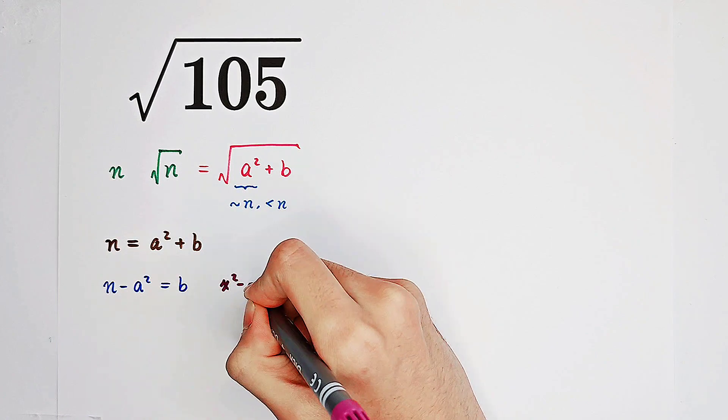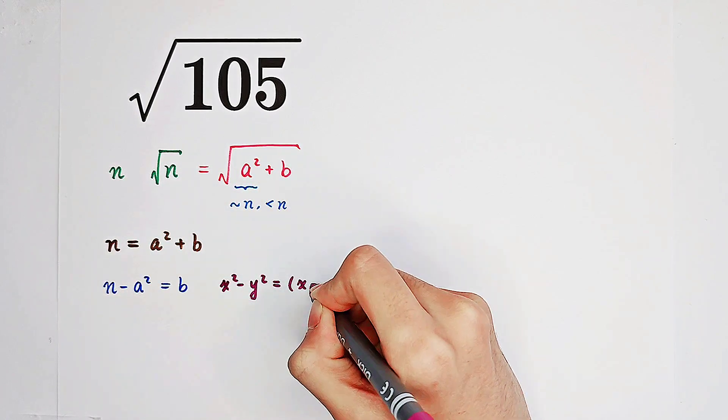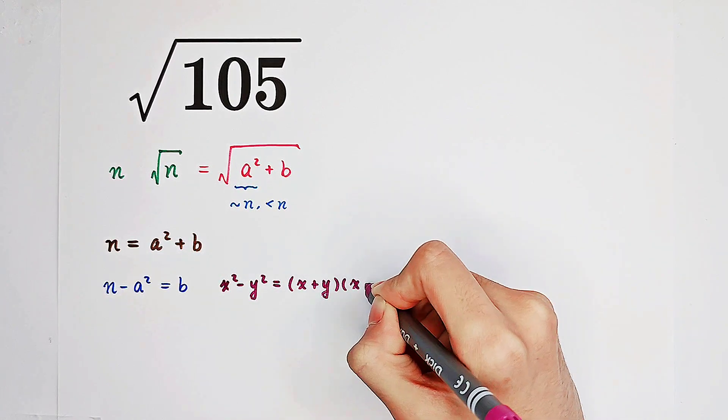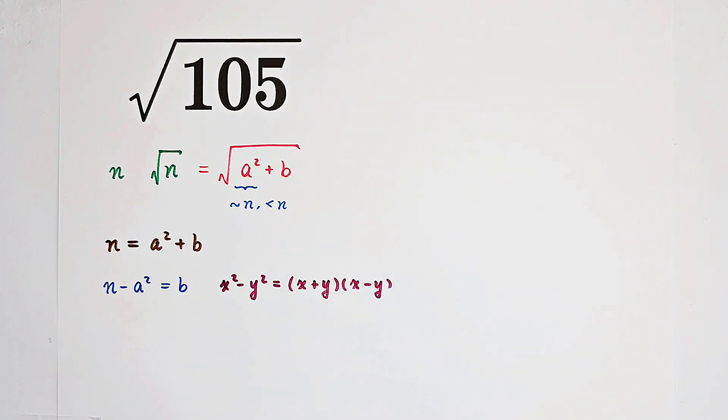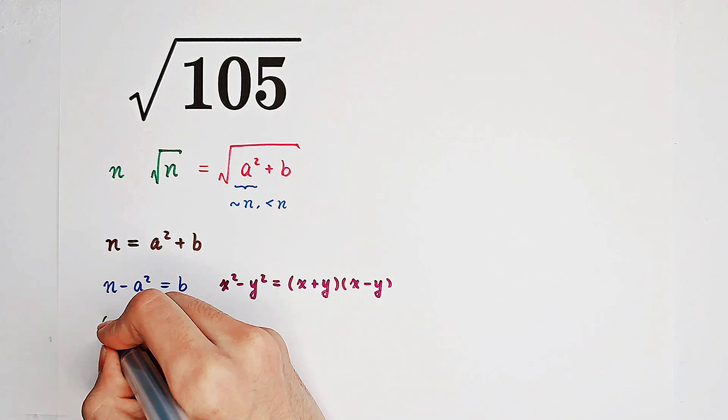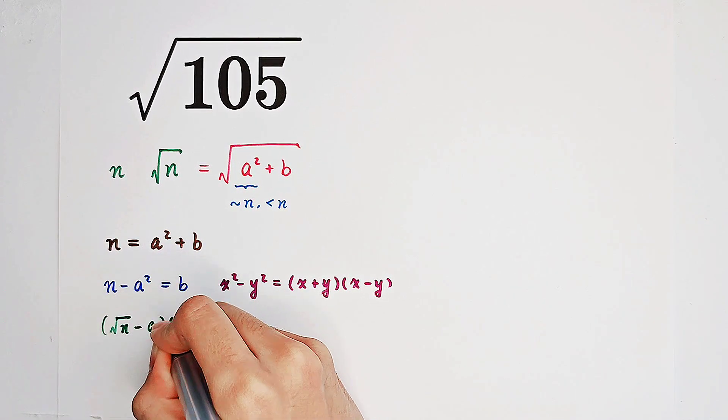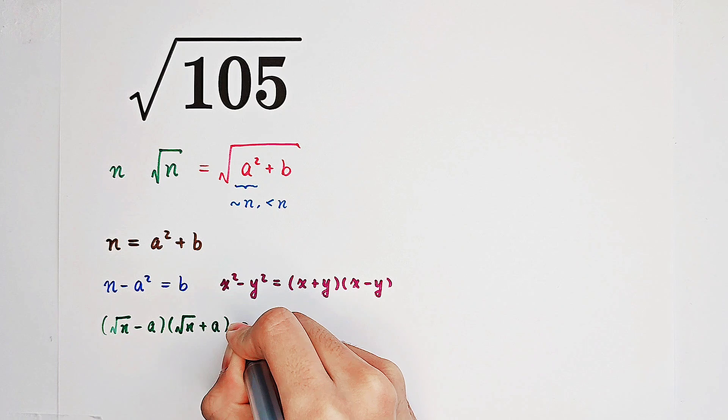x squared minus y squared equals the sum of x and y times the difference of x and y. So now, our n minus a squared can just be written as square root of n minus a times square root of n plus a equals b.